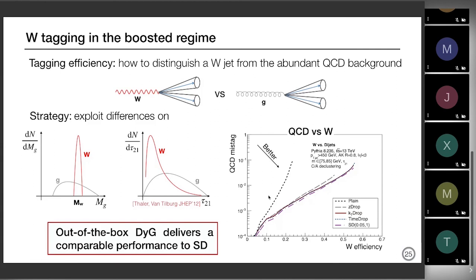Out of the box, dynamical grooming is performing as good as or even better than the soft drop family whose parameters were specifically tuned to give the best performance. kt drop in particular shows an enhanced resilience against background fluctuations. So if I go back to my problem of how to distinguish a W jet from the abundant QCD background, I will use not only the mass but the groomed mass. I expect a peak around the W, while QCD is rather flat. I also exploit the number of hard prongs: gluon jets are more pencil-like — one-prong — while W jets are two-prong objects.